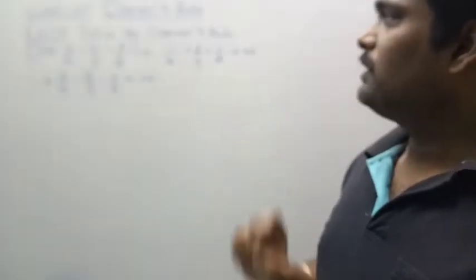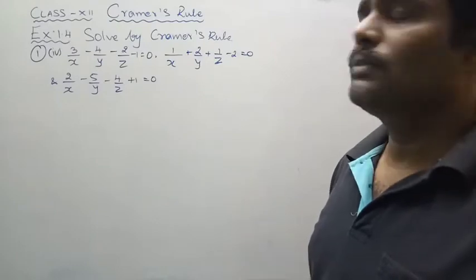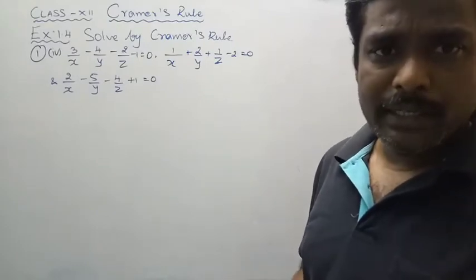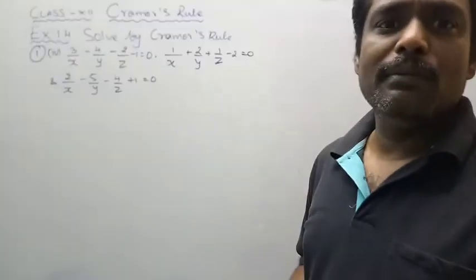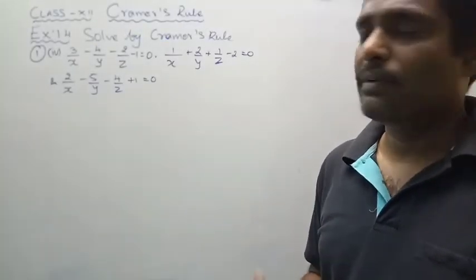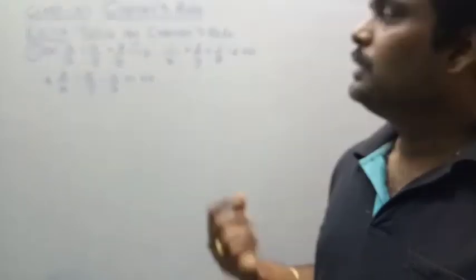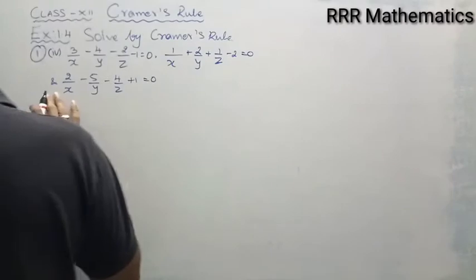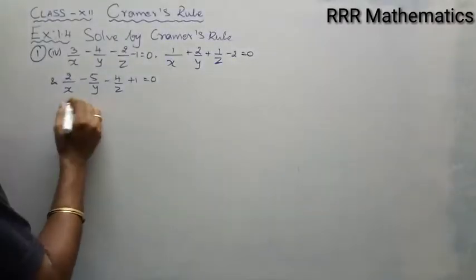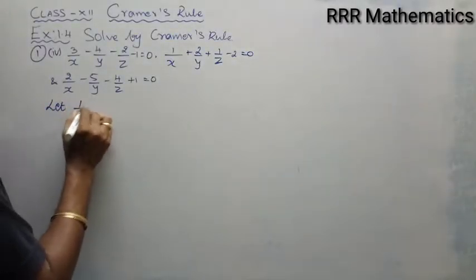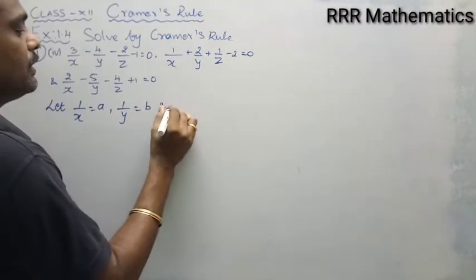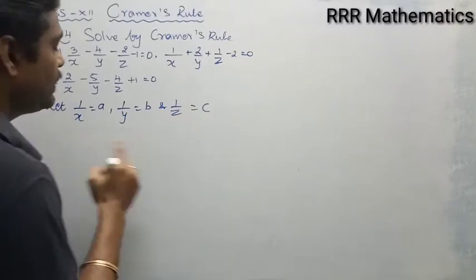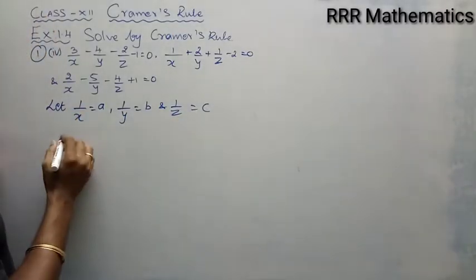When you see the question, in all three equations the variables x, y, z always appear in the denominator. So if x, y, z are in the denominator, we may assume 1/x = a, 1/y = b, and 1/z = c for comfort to proceed with the problem. When you assume like this, it will be very comfortable to proceed.